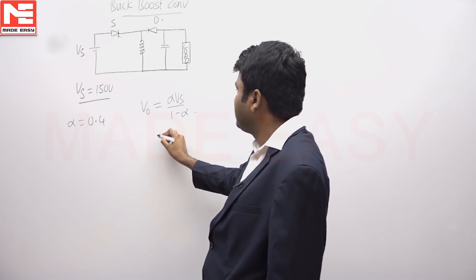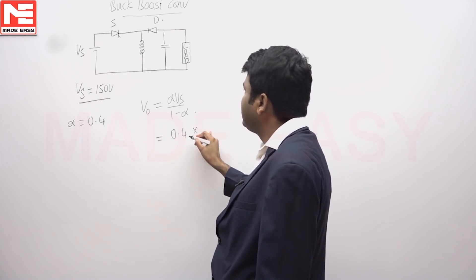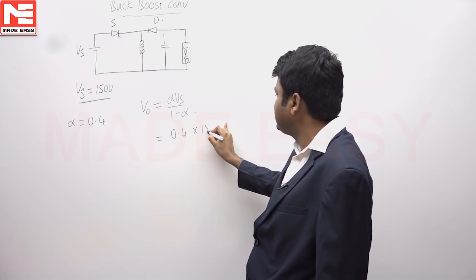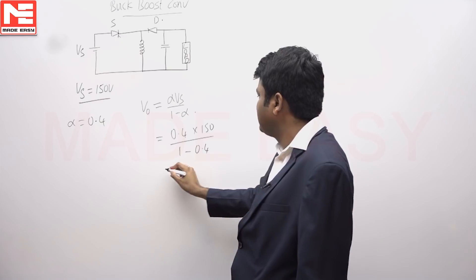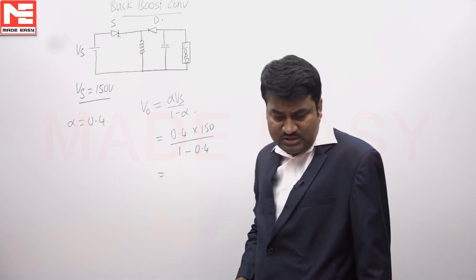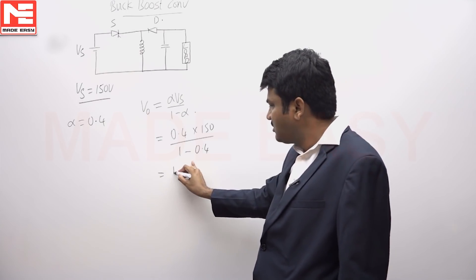You have to find out the average output voltage: duty cycle is 0.4 into supply voltage is 150 volts by 1 minus 0.4. After simplifying this you will get average voltage is 100 volts.